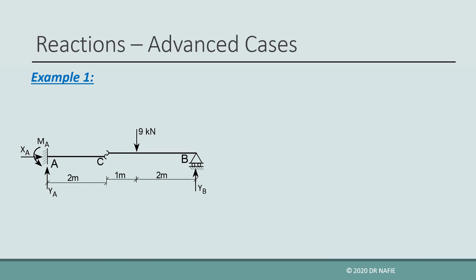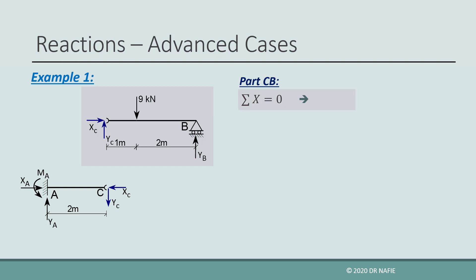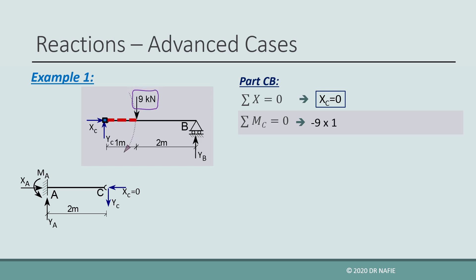This can be done by cutting the beam at point C into two parts. At each part, two internal forces XC and YC will appear. Because the original beam is in equilibrium, any part cut from the beam should also be in equilibrium. So we will apply the equilibrium equations on part CB. By applying sigma X equals zero, XC is found to be zero. By taking the sum of moments about point C, we find that both XC and YC pass through point C and will not be included in the equation. The moment equation will have two terms: a 9 kN force multiplied by an arm of 1 m (negative, clockwise) and YB multiplied by an arm of 3 m (positive, counterclockwise). All terms should sum to zero. From the equation, YB is found to be 3 kN.